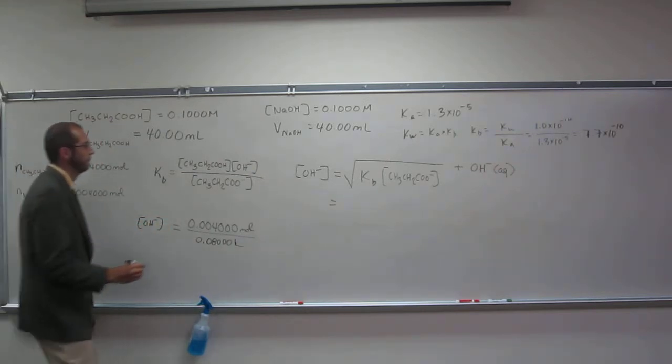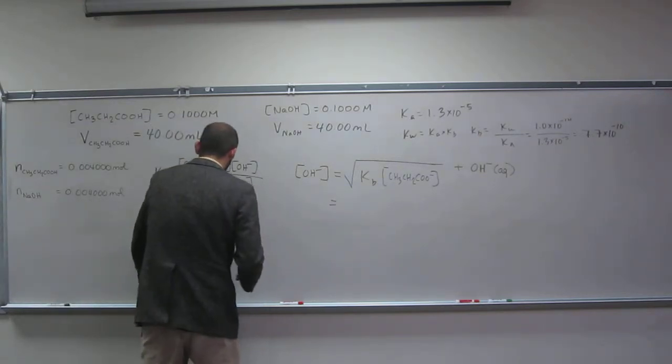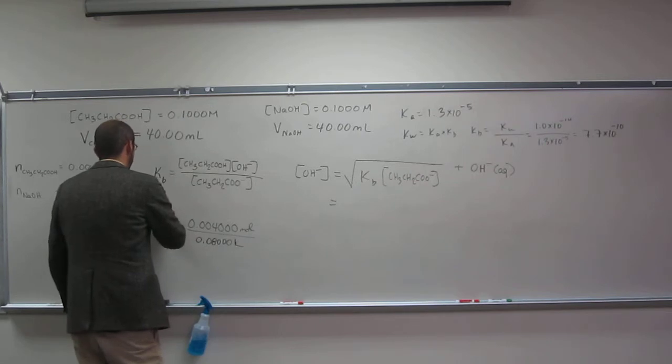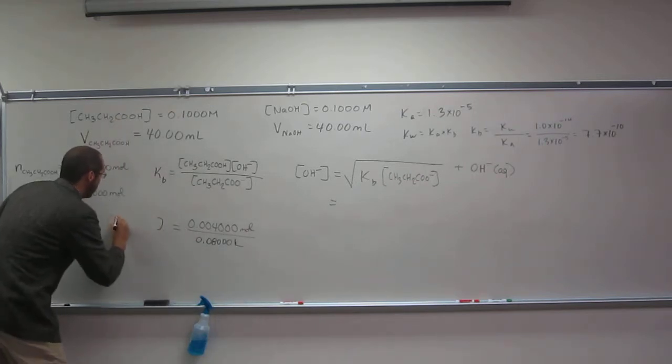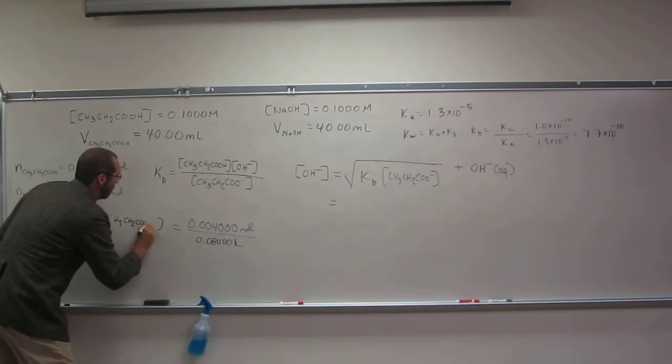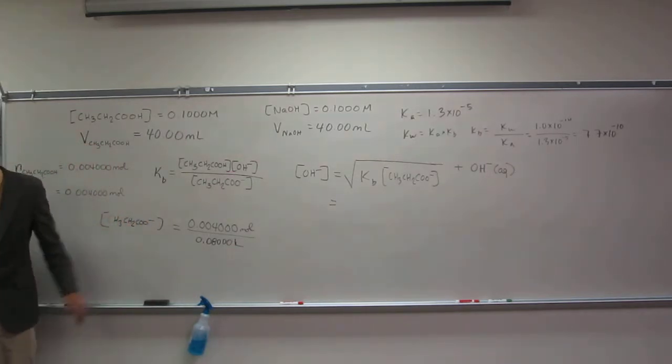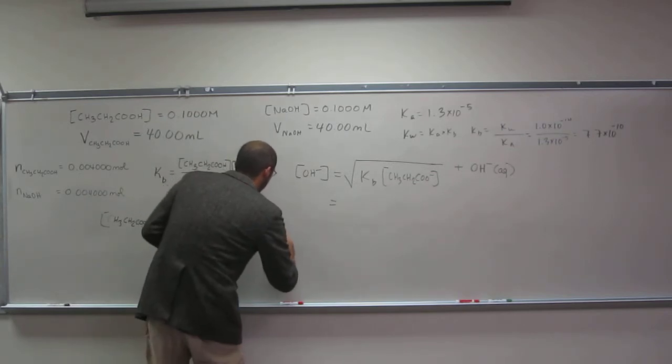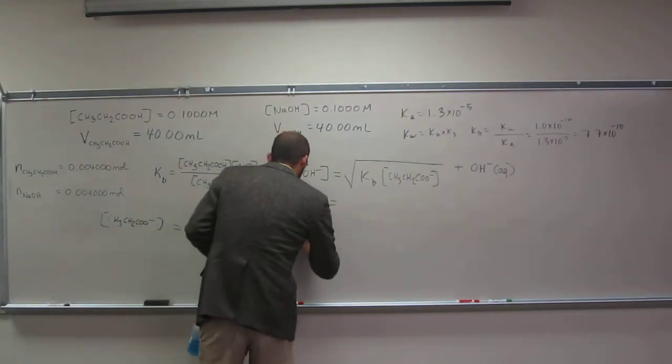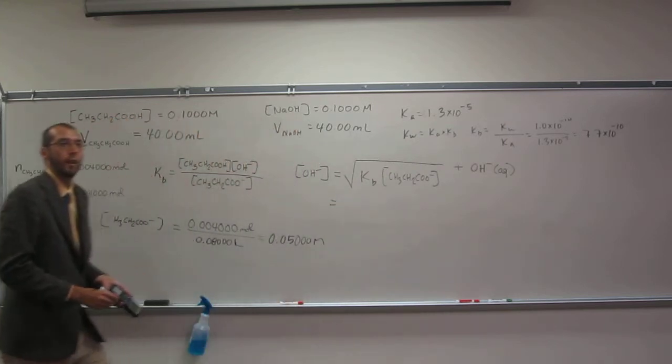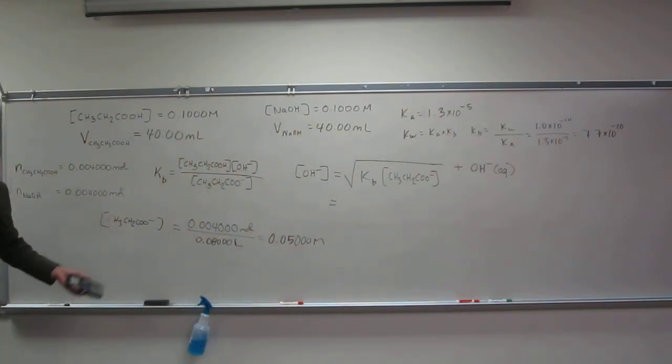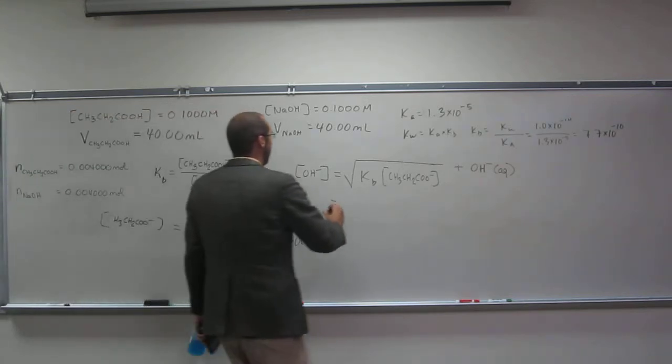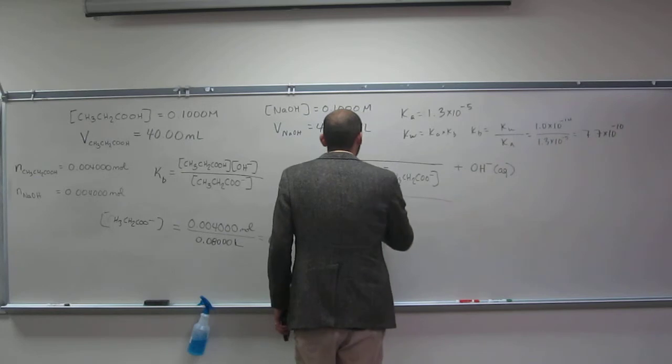So the concentration of OH minus is going to equal the square root of KB times the concentration of the conjugate base. So 0.05000 molar. Not hydroxide, sorry, conjugate base. I keep wanting to misspeak. Sorry about that.